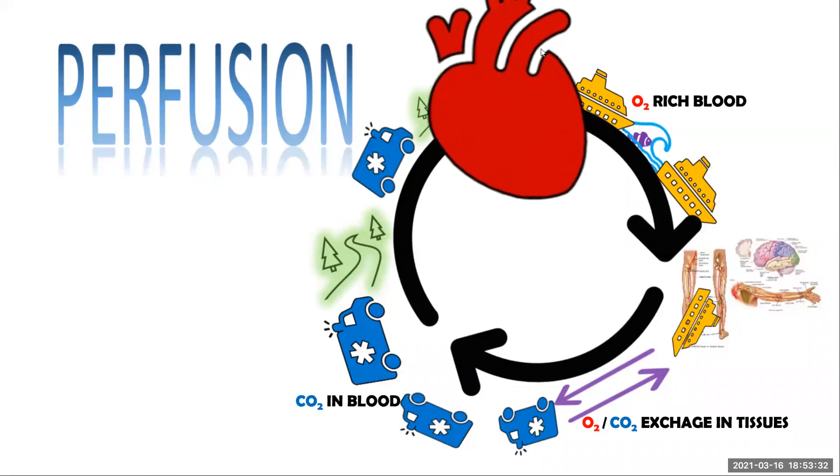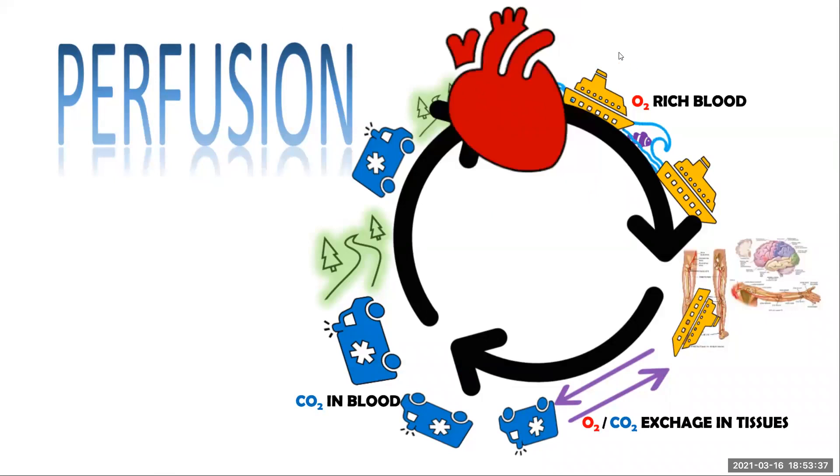So what happens is our heart pumps and it pumps this huge, think of it as when you go on a cruise, not a little boat that you would just take out into the bay, but a huge cruise ship that has lots of oxygen and nutrients in it. And it floats along and goes out to all these areas. You see all the different areas of the body, the brain, the periphery, the lower extremities, the kidneys, the liver, the abdomen. So the blood carries oxygen and nutrients to all these areas.